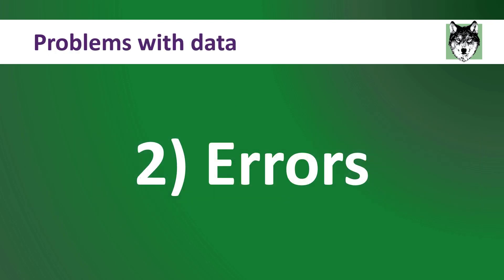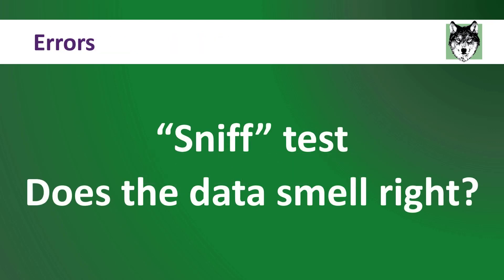Number two: errors. A lot of the time, data just has errors, or you might accidentally have pulled the wrong data from the wrong time period or the wrong department. That is why you should never blindly follow the data. You always want to be double-checking for errors. One common thing that accountants do is perform a sniff test — you ask yourself, does your conclusion smell right? You pull the data, perform an analysis, arrive at a conclusion, but then take a step back. If your conclusions don't seem right or don't make sense, go back and check your data.